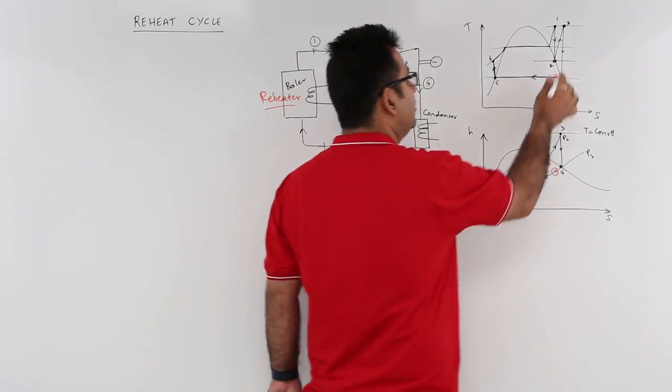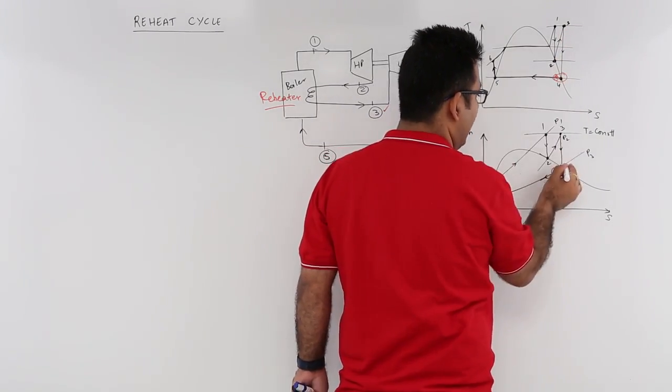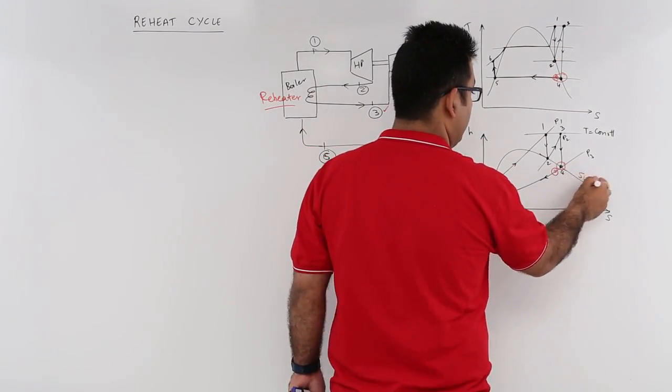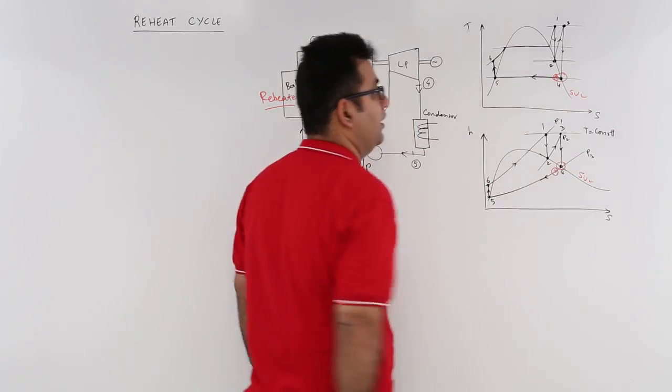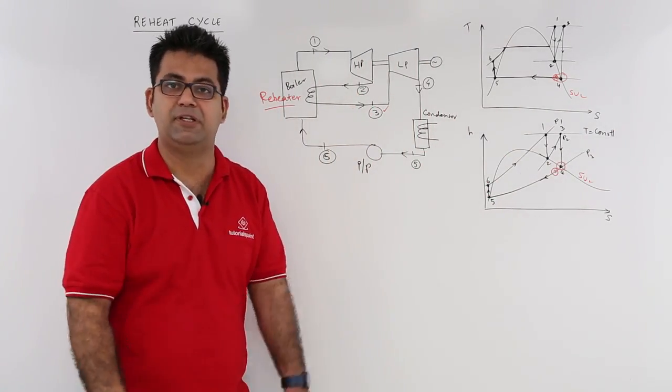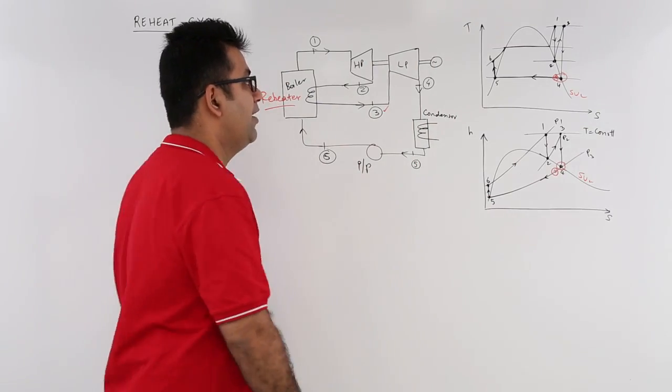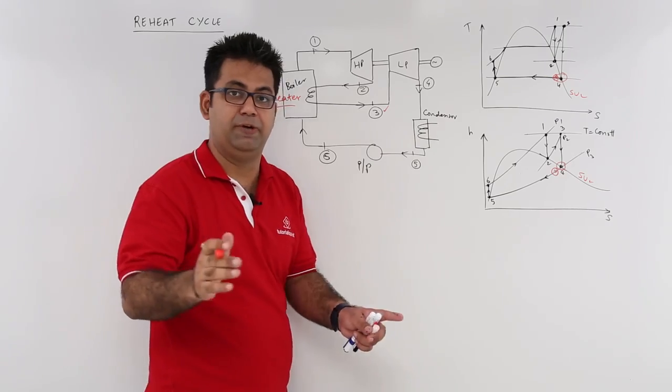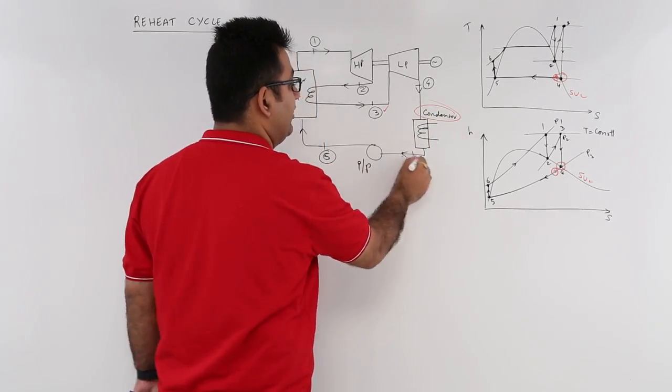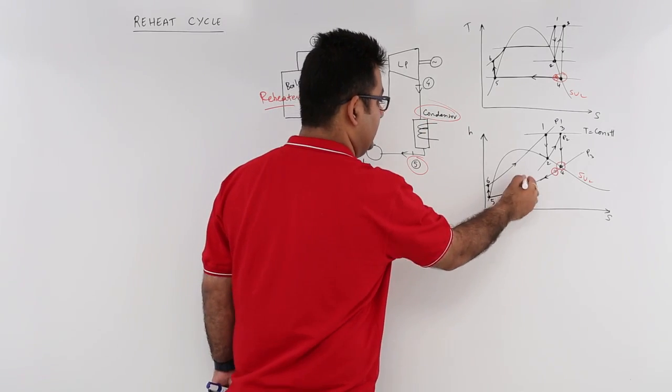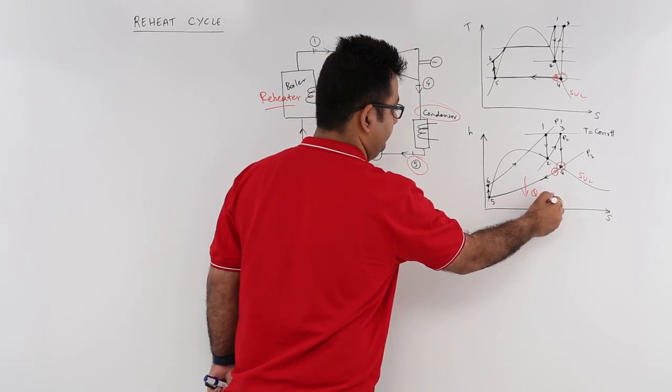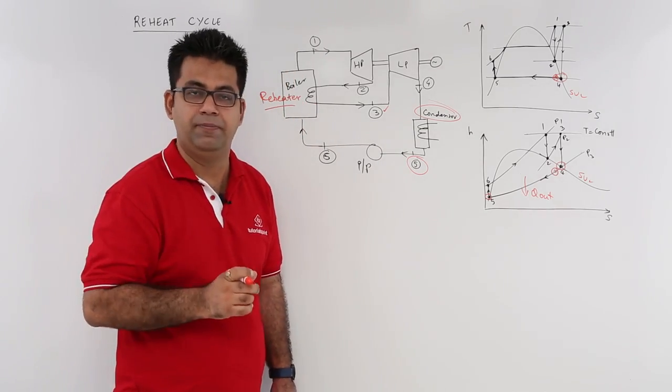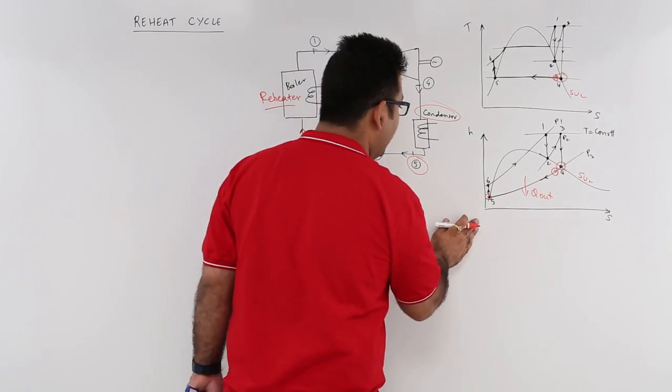From that 100% vapor state, we condense it at constant pressure in the condenser and come to state 5. That is Q_out, and this is saturated liquid.